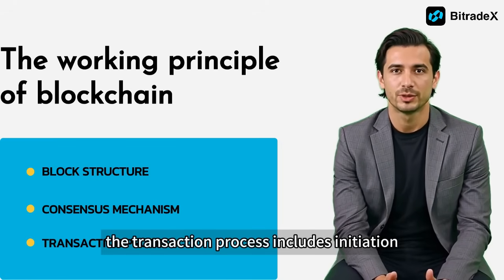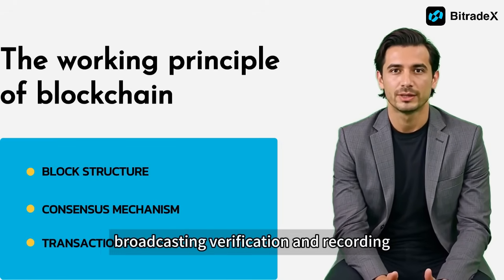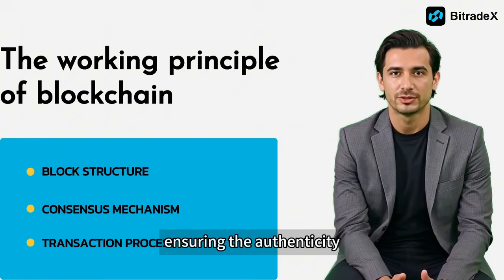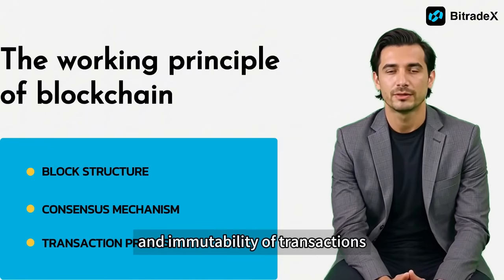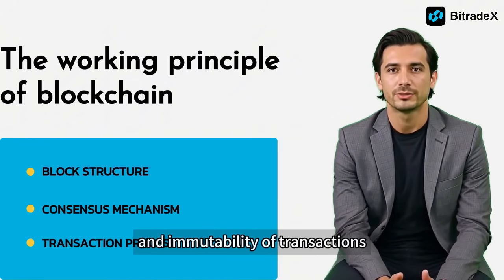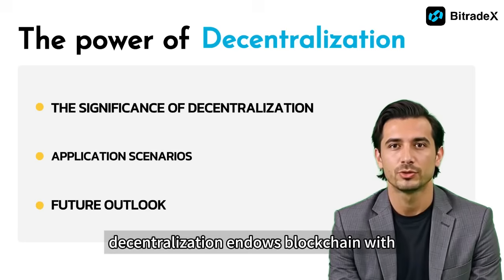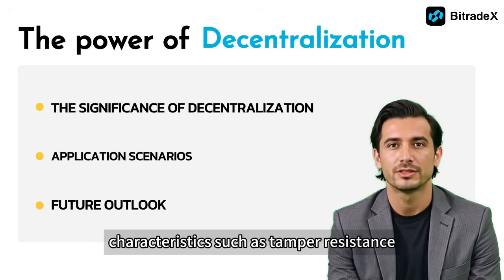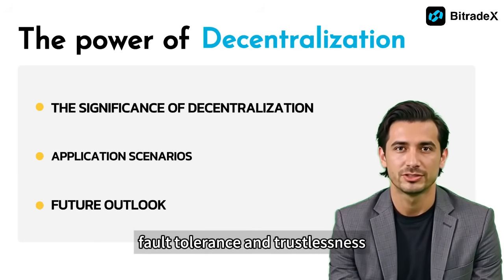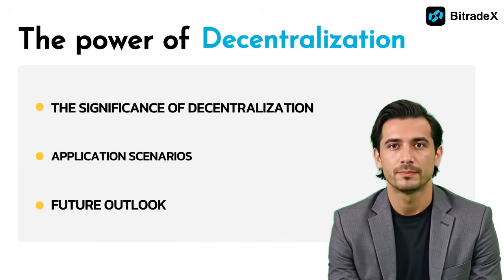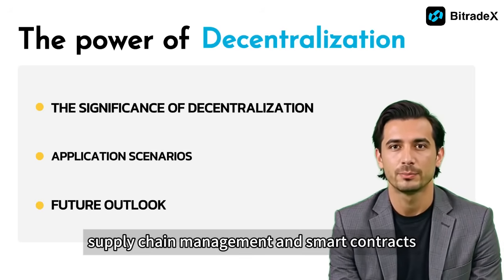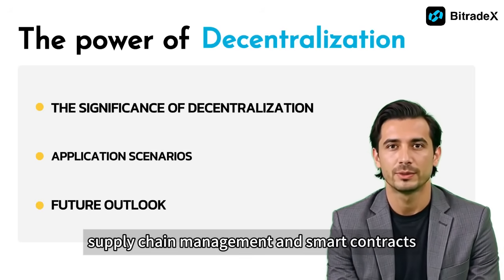The transaction process includes initiation, broadcasting, verification, and recording, ensuring the authenticity and immutability of transactions. Decentralization endows blockchain with characteristics such as tamper resistance, fault tolerance, and trustlessness. It has extensive applications in fields like finance, supply chain management, and smart contracts.